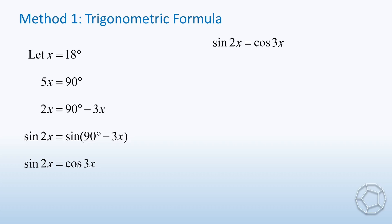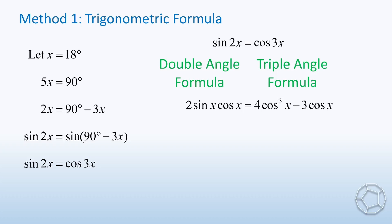Let's apply the double angle formula for sine 2x, which is 2 sine x cosine x. Then, for cosine 3x, we use the triple angle formula. That is, 4 cosine 3x minus 3 cosine x. On both sides, we can cancel out cosine x, because it's non-zero.